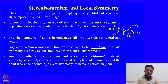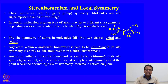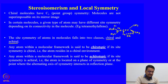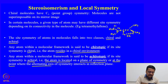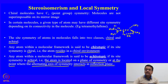This site symmetry of atoms in molecules falls into 2 classes: chiral and achiral. In a molecule, a site of a carbon atom can be a chiral site or an achiral site. Any atom within a molecular framework is said to be achirotopic if its site symmetry is achiral — that is, the atom is located on a plane of symmetry or at the point where the alternating axis of symmetry intersects a reflection plane. We will try to understand this in the next few slides.